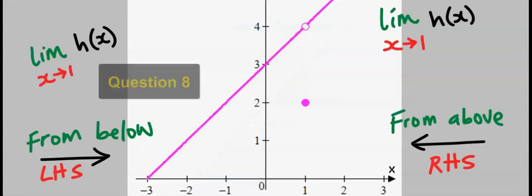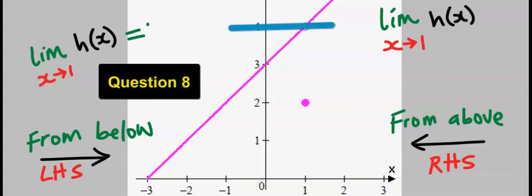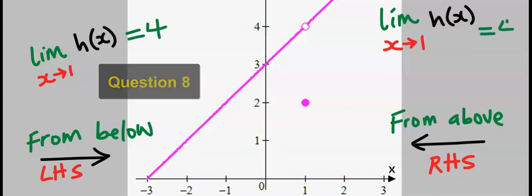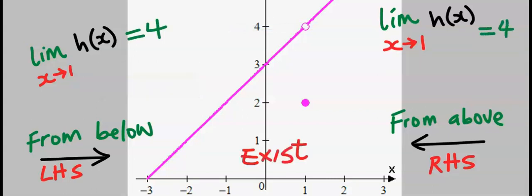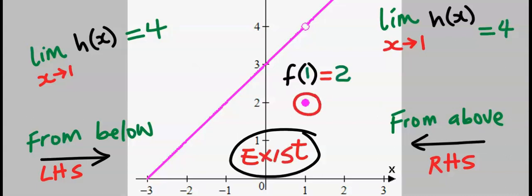Next, from the left we get 4 and from the right we also get 4, so this limit exists. The shaded portion simply means that f(1) is equal to 2. Remember, the hole and the shaded point have different meanings, which we have explained.